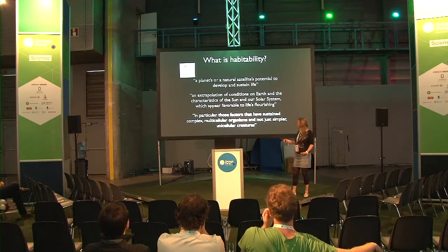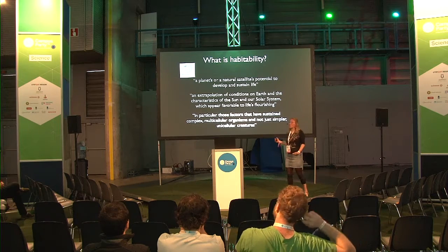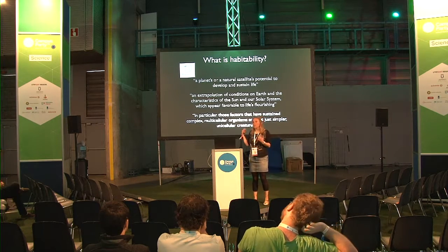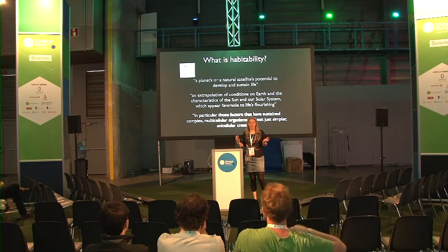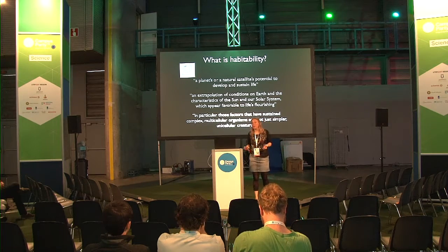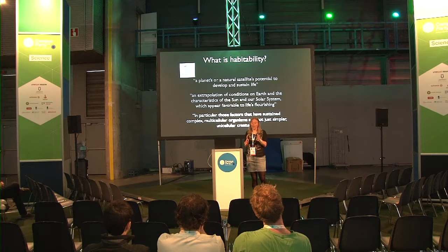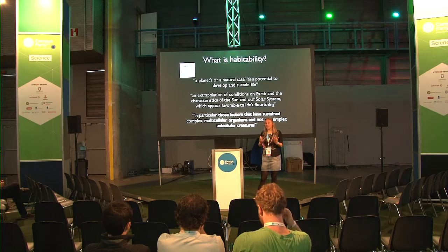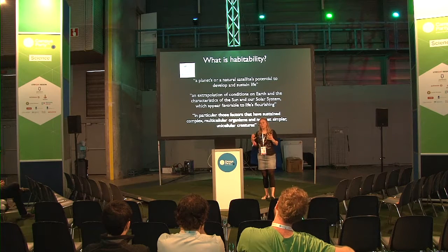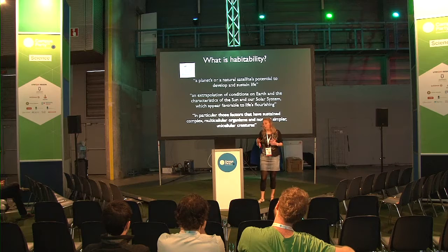In particular, we focus on those factors that have sustained complex multicellular organisms, and not just simple unicellular creatures. If you look at life on Earth, we see everything from unicellular life to everything as complex as we are, and for both you have a definition of habitability. For unicellular life, it's much easier to create a niche than for multicellular complex systems, because they're much more prone to be affected by different kinds of conditions.